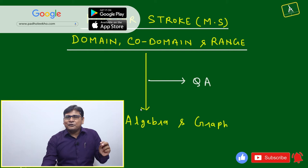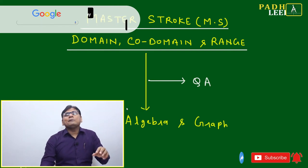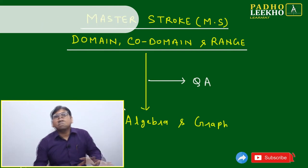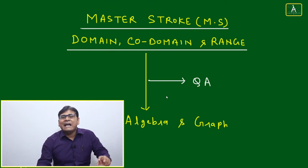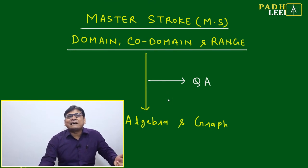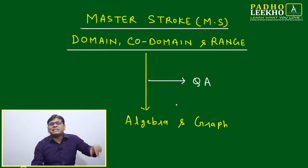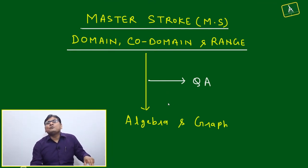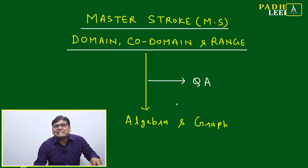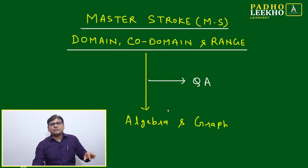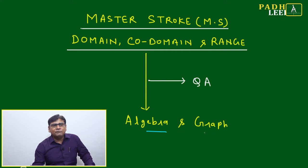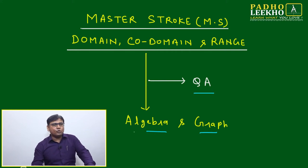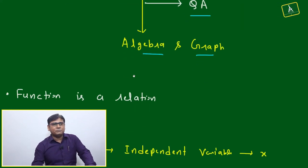It is a little bit confusing, but no need to worry. I will make it very crystal clear: what is the domain, what is the co-domain, and what is the range; under which condition range will be exactly equal to co-domain; under which condition range will be a proper subset of co-domain. This is part of algebra and graphs, and it is going to affect your quantitative ability preparation.